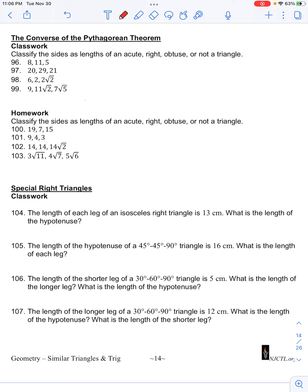So first we want to check if the sides will form a triangle. So we have sides of length 9, then converting 11√2 to decimals we'll have 15.56, then 7√5 to decimals will be 15.65.